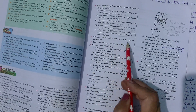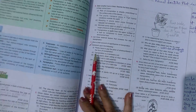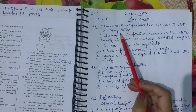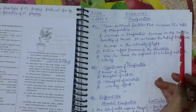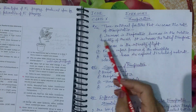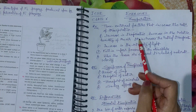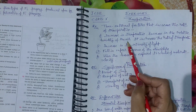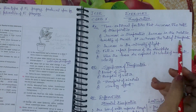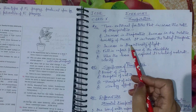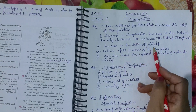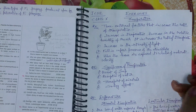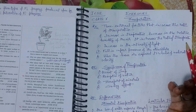Three external factors that increase the rate of transpiration: first, increase in temperature; second, decrease in the relative humidity of the air — it increases the rate of transpiration; third, increase in the intensity of light — more high intensity of light means more transpiration, less intensity of light means low transpiration.